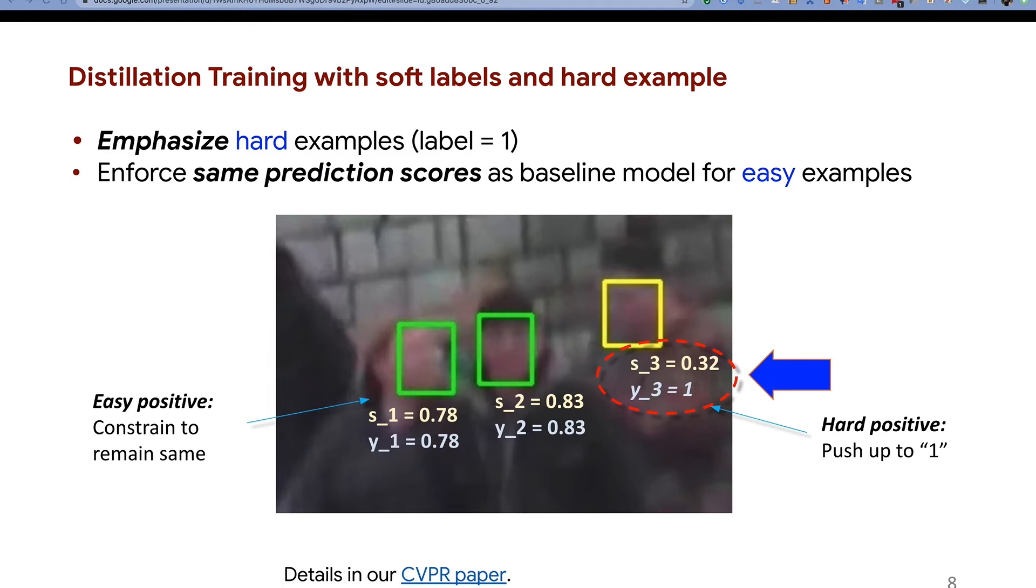In this picture, the left two green boxes are easy examples, and the yellow box is the hard example. S means the detection score in the base model, and Y is the new label we assign. We keep the same prediction scores on easy examples, where Y1 equals S1 and Y2 equals S2. However, we emphasize the label on hard examples, keeping Y3 equal to 1. Details please see our CVPR paper.